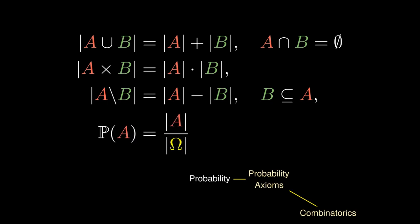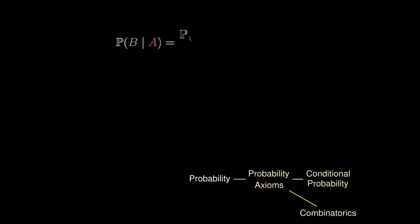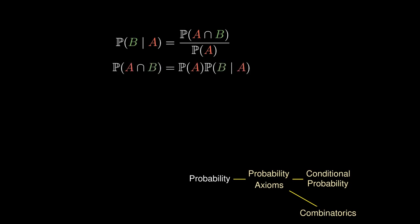When considering events sequentially, we want to consider the notion of conditional probability, which is defined by the probability of the intersection divided by the probability of the event assumed. This helps us calculate the probability of both events happening via the probability of the first event happening, followed by the probability that the second event happens assuming the first does.